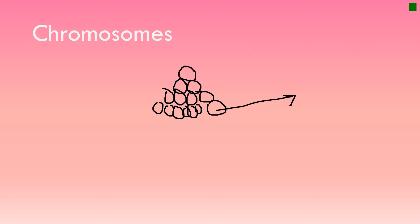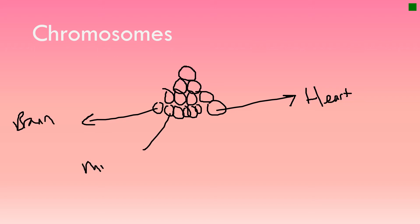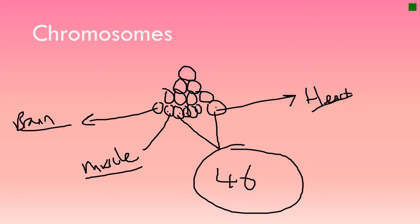Some cells will start to differentiate — some will start to become a heart, some a brain, some muscle, some a human form. Now, what tells these cells to become heart or muscle or brain? Well, it's actually the chromosomes inside that cell. Each cell has the same chromosomes in it — the same 46 chromosomes. It's just that certain chromosomes are switched on, certain are switched off: some are speaking heart, some are speaking muscle.